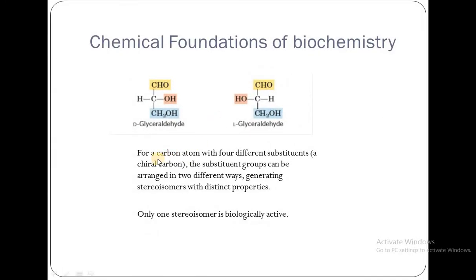A carbon atom with four different substituents is called a chiral carbon. Its substituents can be arranged in two ways, giving D-glyceraldehyde and L-glyceraldehyde. The only difference is the position of the substituents — the OH group is on the right side in the D isomer and on the left side in the L isomer. These generate stereoisomers with distinct properties, and only one will be biologically active.